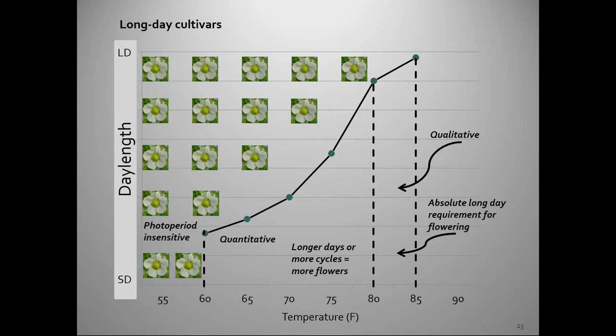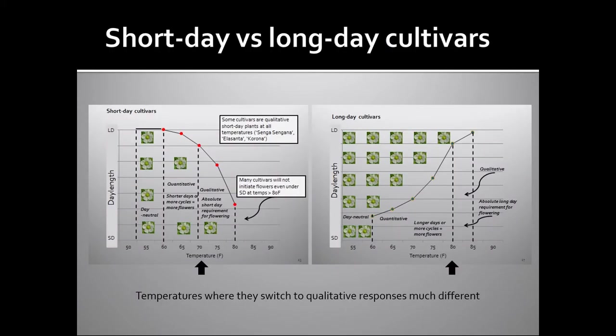When you compare the two side-by-side, the main thing to see is basically the difference in what's happening as the temperature gets warmer. In short-day cultivars, the day length is getting shorter. In long-day cultivars, the day length has to get longer to get flowering. The temperature at which they make the switch from quantitative to qualitative response is around 70°F in short-day cultivars and about 80°F for long-day cultivars.